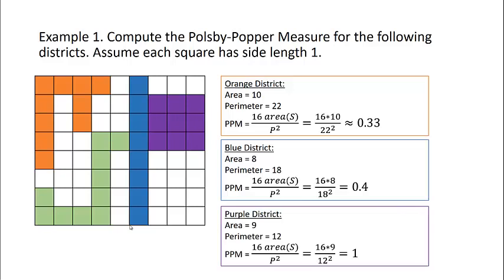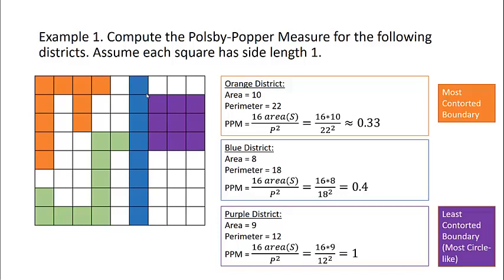Lastly, let's focus on the purple district. The area, counting the number of squares, is 9. The perimeter around the exterior of the purple region is 12. So the Polsby-Popper measure is 16 times our area of 9 divided by our perimeter of 12 squared, giving us a Polsby-Popper measure of 1. This tells us that the orange district, with the smallest Polsby-Popper measure, has the most contorted boundary, while the purple district with a measure of 1 is the most circle-like — and looking at the picture, that does ring true.